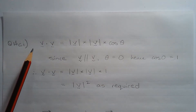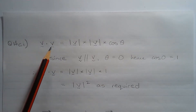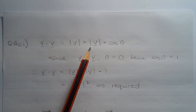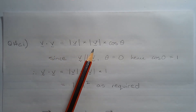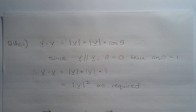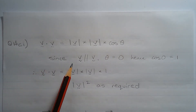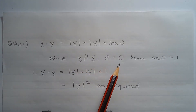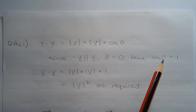The dot product of vector v and vector v is equal to the magnitude of vector v multiplied by the magnitude of vector v multiplied by cos theta, where theta is the non-reflex angle between the two vectors. Now, since vector v is parallel with vector v, theta is equal to zero, hence cos of zero equals one.